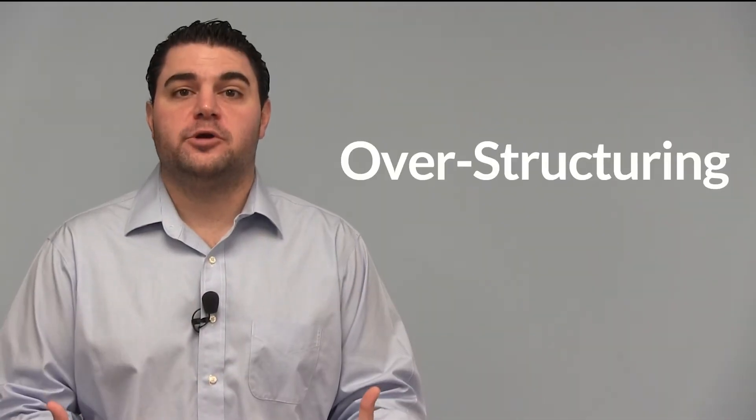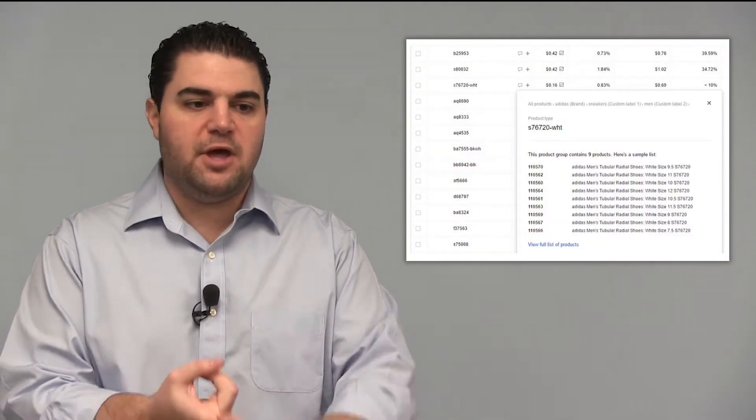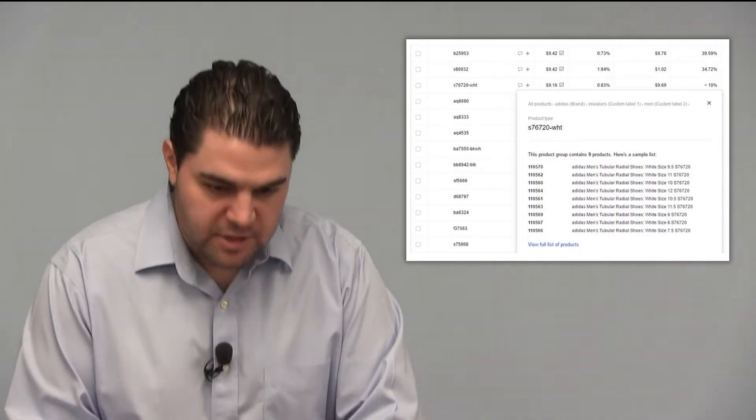We're talking about over-structuring, or going way too far with your subdivision and never actually getting down to that super granular ID level. So in this case, this retailer has essentially subdivided by brand, by category, then by custom label, then by something else, then by something else.